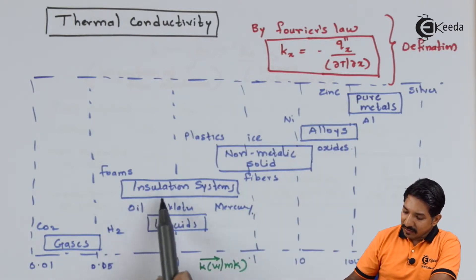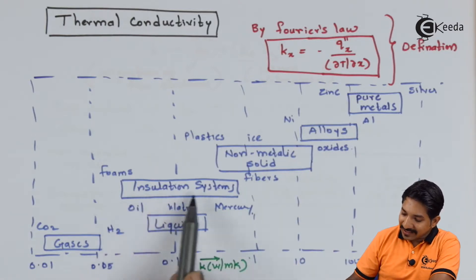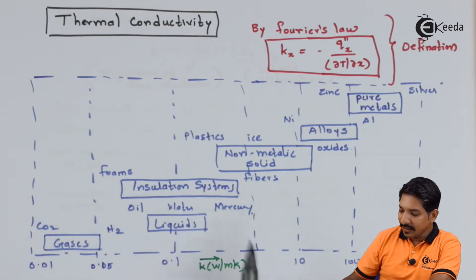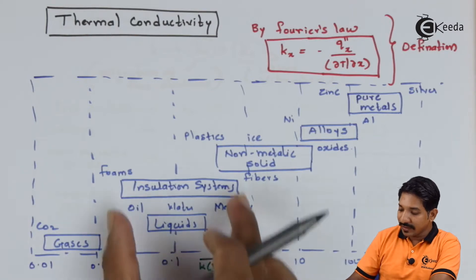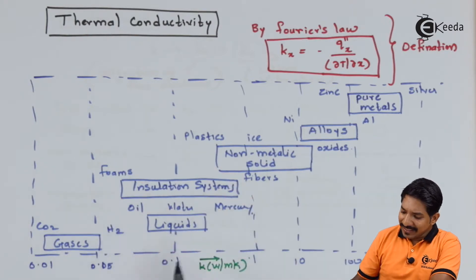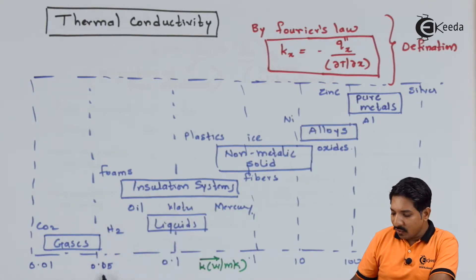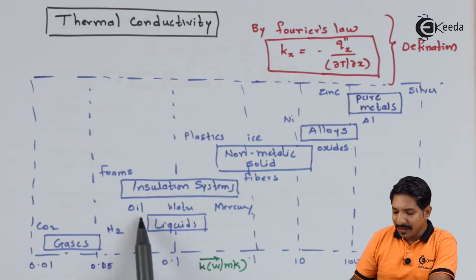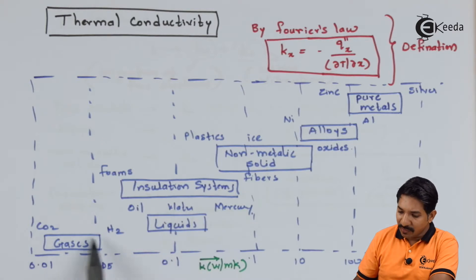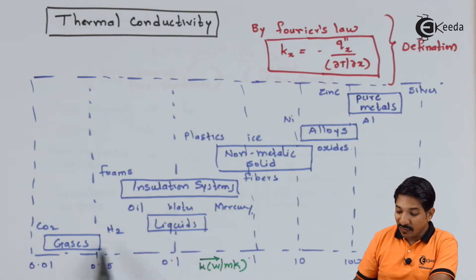For insulation systems such as foams and fiber, the value ranges from around 0.05 to 1. For liquids like oil, water, and mercury, it stays around 0.05 to 0.25. For gases such as CO₂ and H₂O, the thermal conductivity is very low, around 0.05.